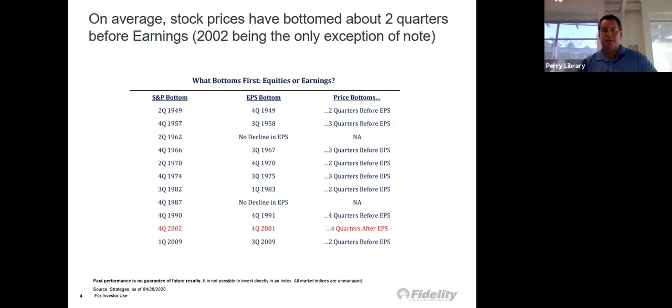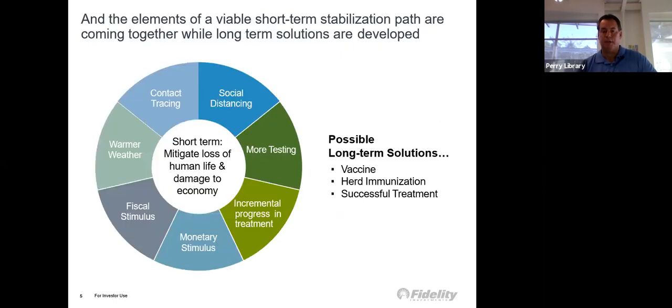If you look on average, stock prices have bottomed about two quarters before the earnings do. You'll see the stock price go down, and then as the earnings report comes out, usually a couple periods later, you'll see that go down further. The elements for short-term stability: we have contact distancing, social distancing, contact tracing, more testing going on, monetary stimulus, fiscal stimulus, warmer weather. These mitigate the loss of human lives and damage to the economy in the short term. Long-term solutions could be a vaccine, herd immunization, and successful treatments.